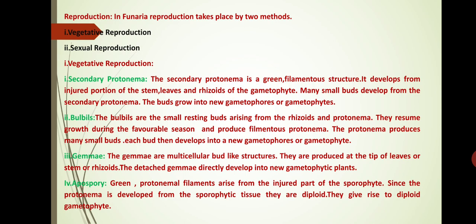The next method is by bulbils. Bulbils are small resting buds arising from the rhizoids and protonema. They resume growth during a favourable season and produce filamentous protonema. The protonema produces many small buds and each bud then develops into a gametophore or gametophyte. The next method is by gemmae. Gemmae are multicellular, bud-like structures. They are produced at the tip of leaves, stem or rhizoids. The detached gemmae directly develop into new gametophytic plants.